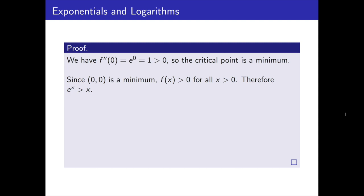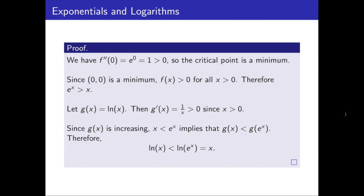Now we had one more inequality, which was the natural logarithm compared with x. So the natural logarithm is a function, and we can take the derivative of it. We get 1 over x, and we know this is positive for positive values of x. So if we have a positive function, that means if you apply it to x and e to the x, where we already determined x is smaller,